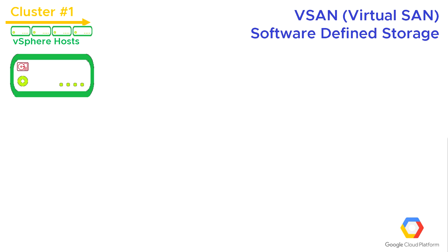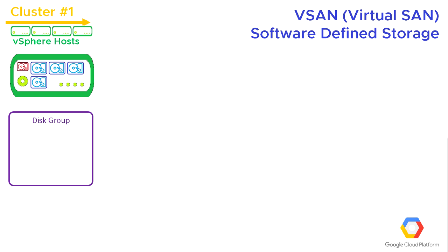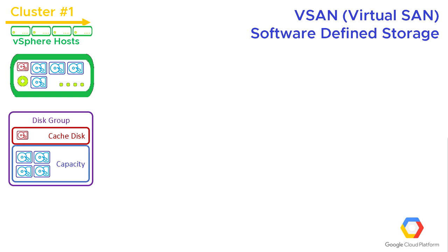I'm going to put in a cache disk, which I'll show in red, and then some capacity disks, which I'll show in blue. This is just a representation — I'm not saying that Google Cloud VMware Engine host servers have exactly this shape, size, or number of disks. It's just conceptual. For each server in the vSAN cluster, I'm going to create something called a disk group. A disk group takes the capacity from the cache disk and the capacity disks and turns it into a single entity — at least one cache disk and at least one capacity disk. That now becomes a thing in its own right, and we've got a disk group in that first server.